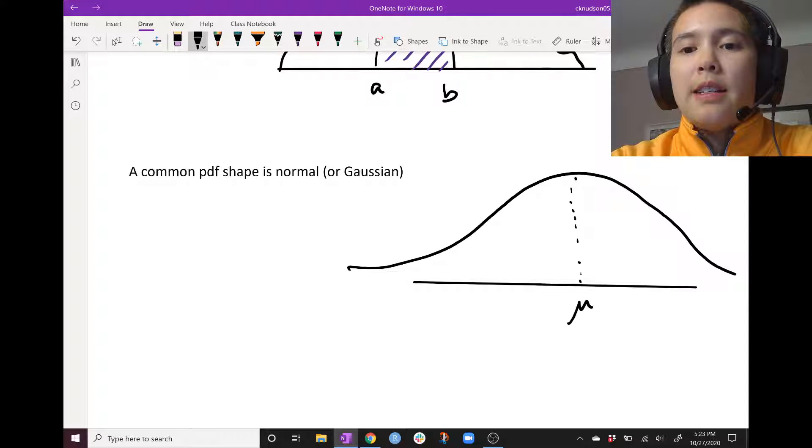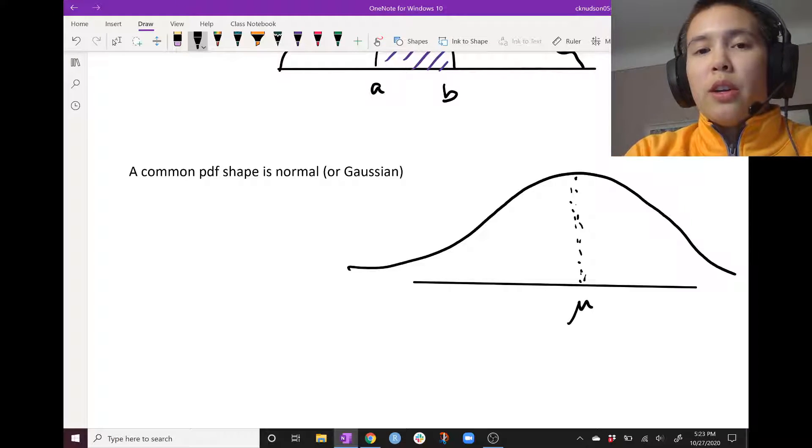And it has mu, it's mean in the center. And it's symmetric about this point. So in other words, if I rotated this, flipped it so that this point is over here, and this point over here, we would see symmetry.